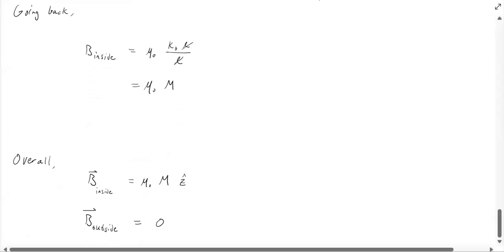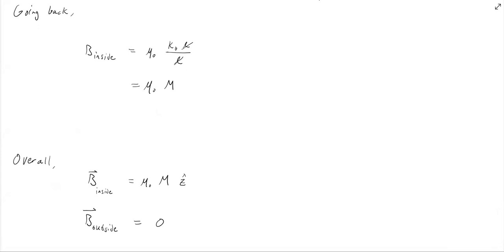Overall for this problem: B_inside equals mu naught times M in the Z hat direction, pointing upwards, and B_outside is simply zero. I hope you enjoyed this solution — thank you so much for listening.